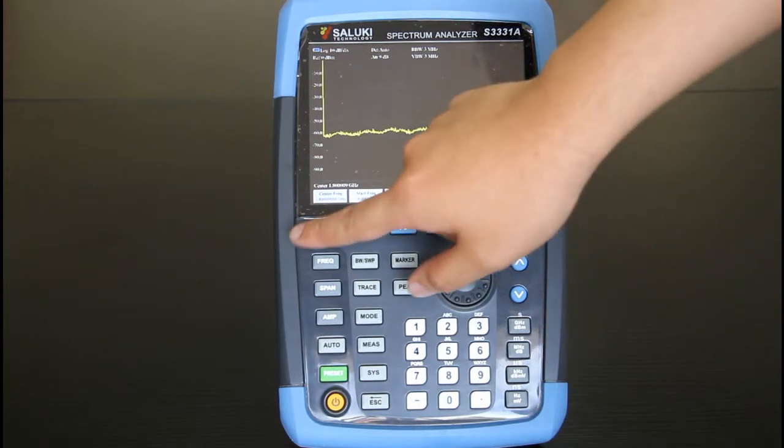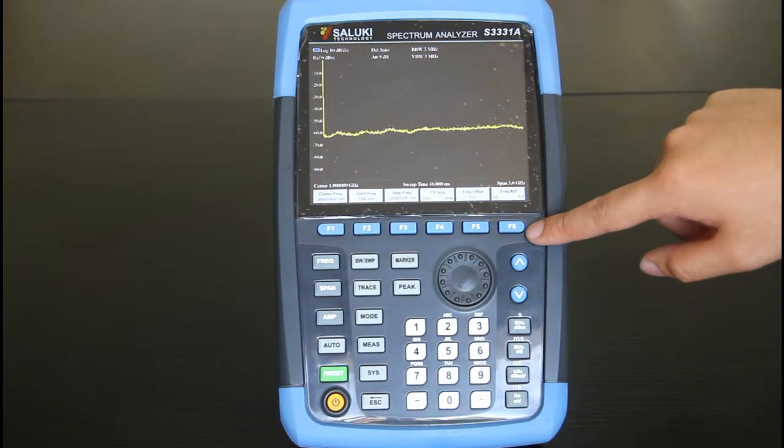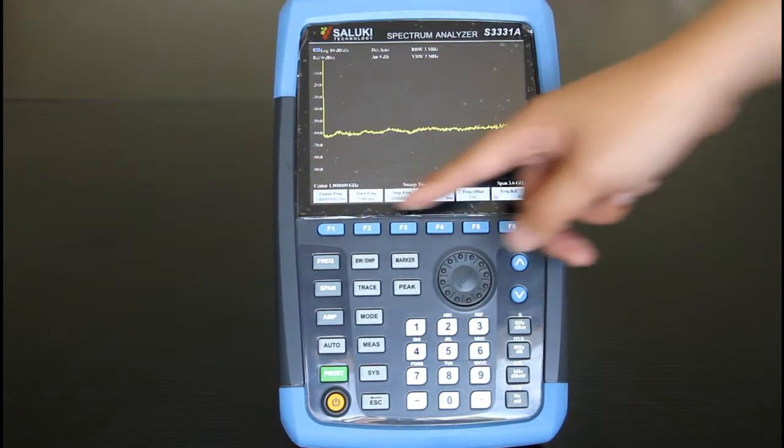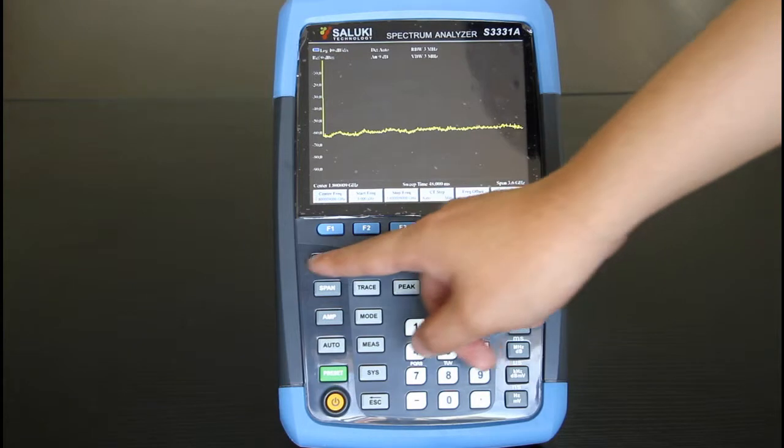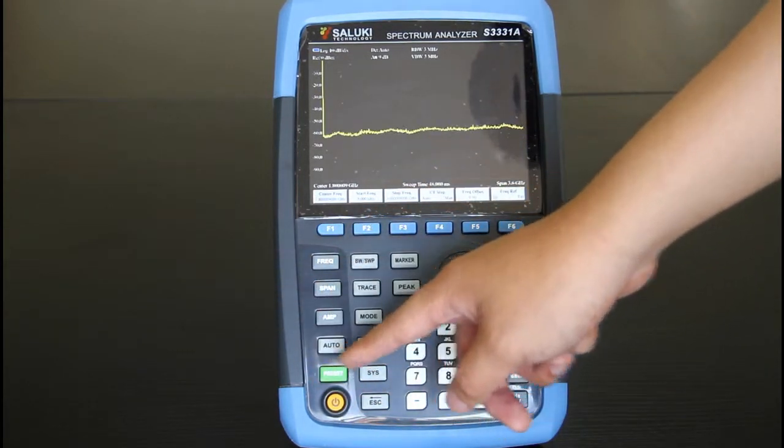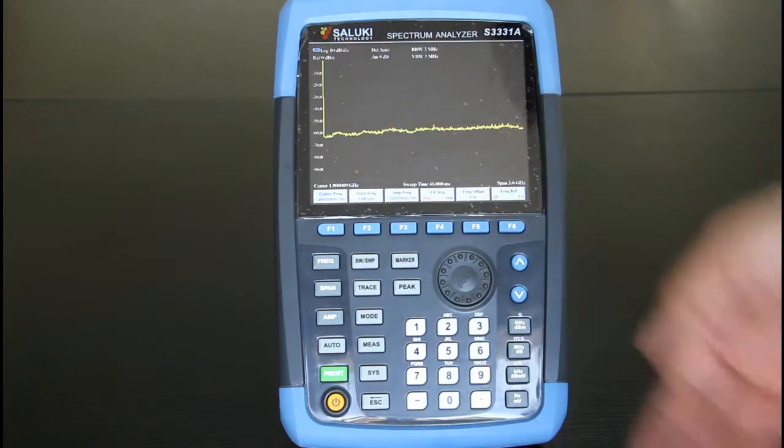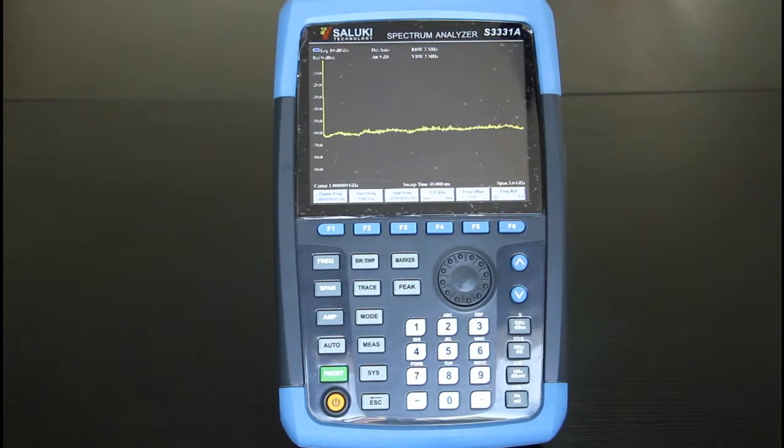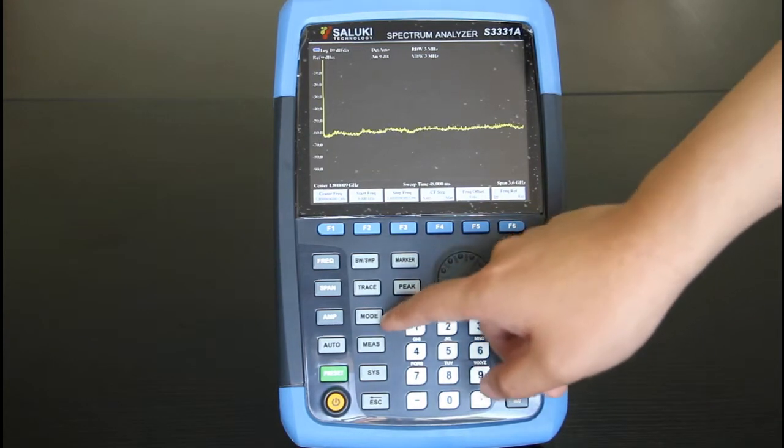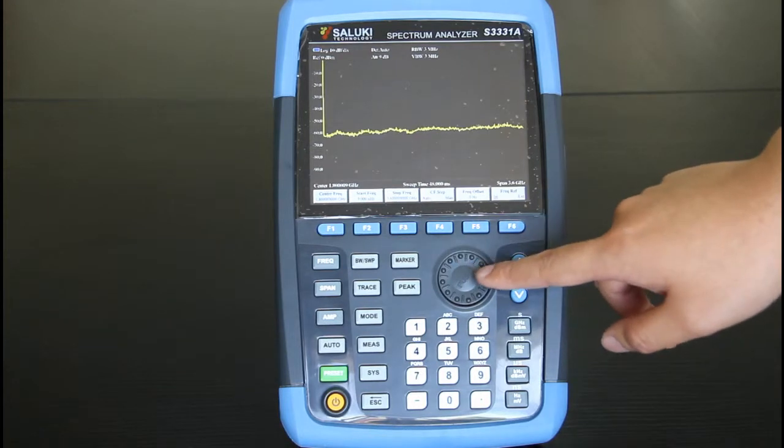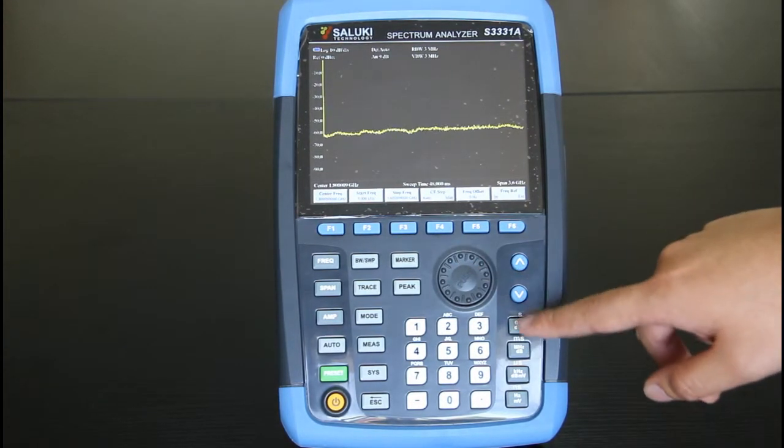Below it there are six soft keys corresponding to the soft menus shown in the screen. On the left side this area is the function keys. You can do the settings and select the measurement mode with these keys. On the right side there are numbering keys, knob navigation key and unit keys.